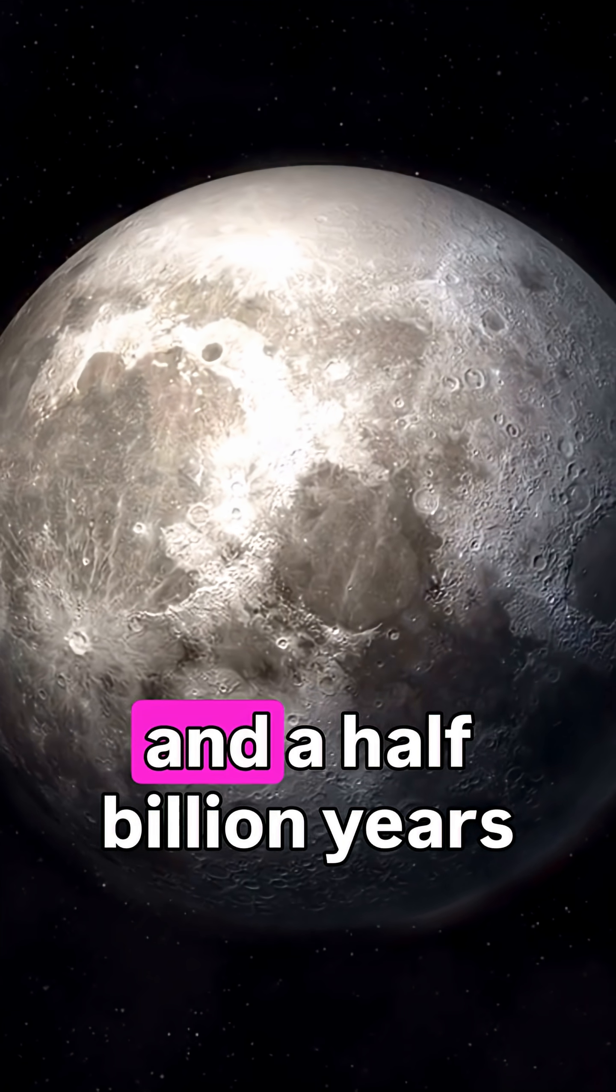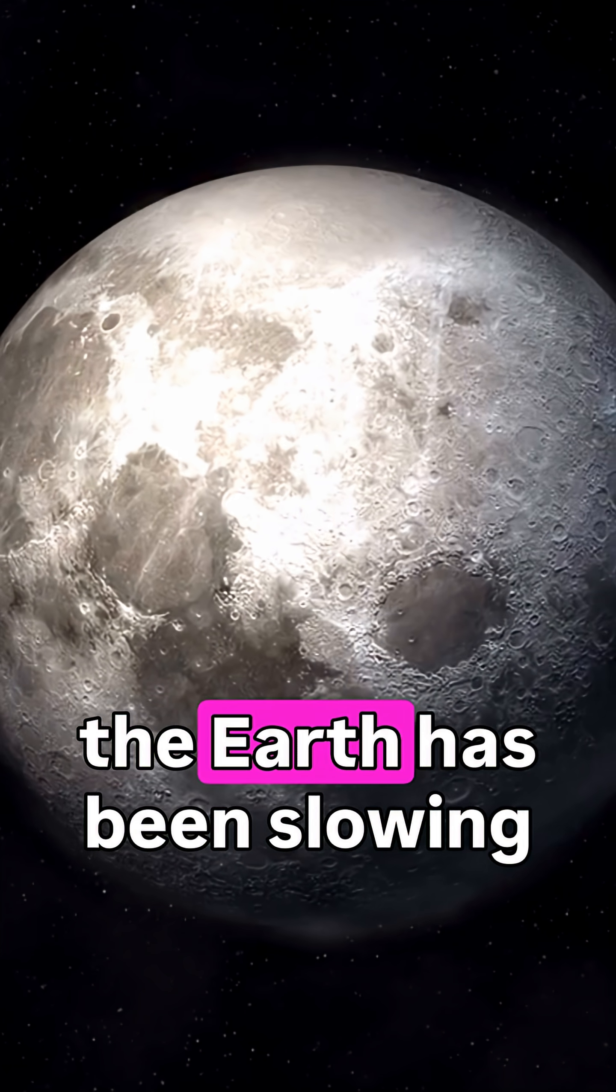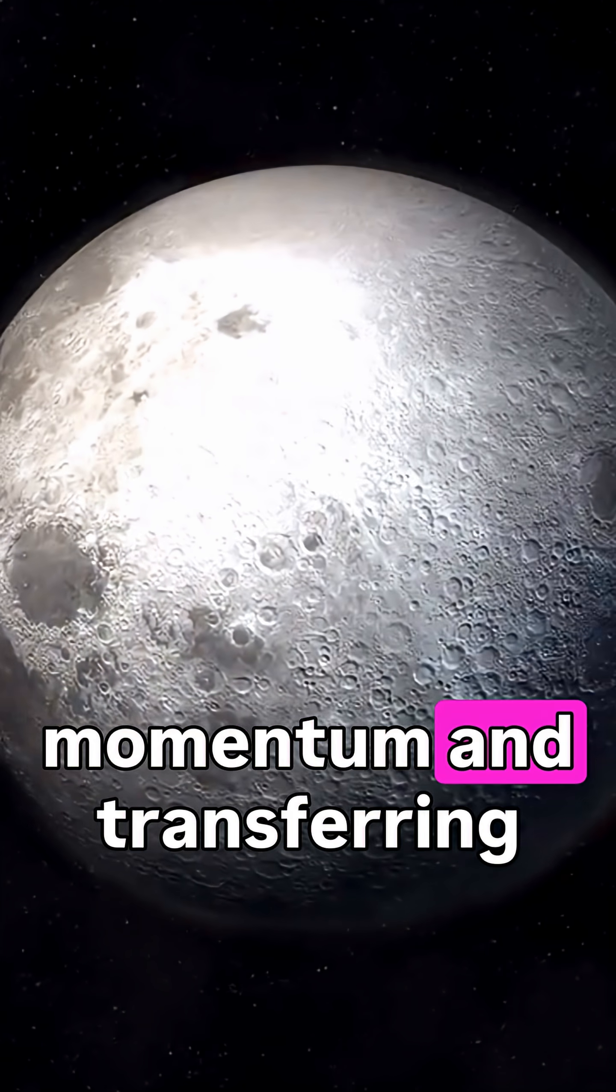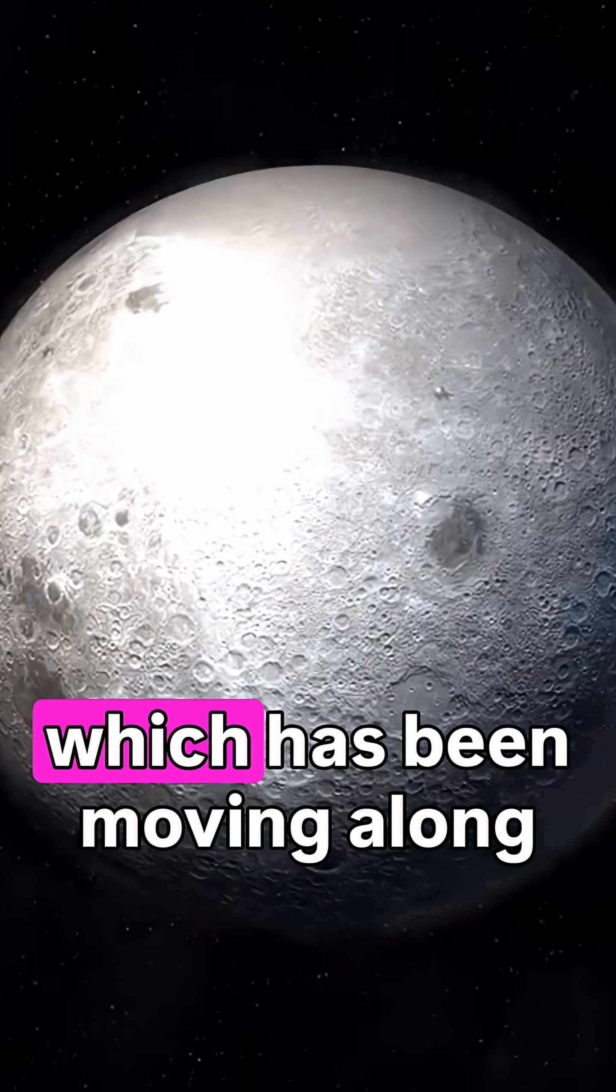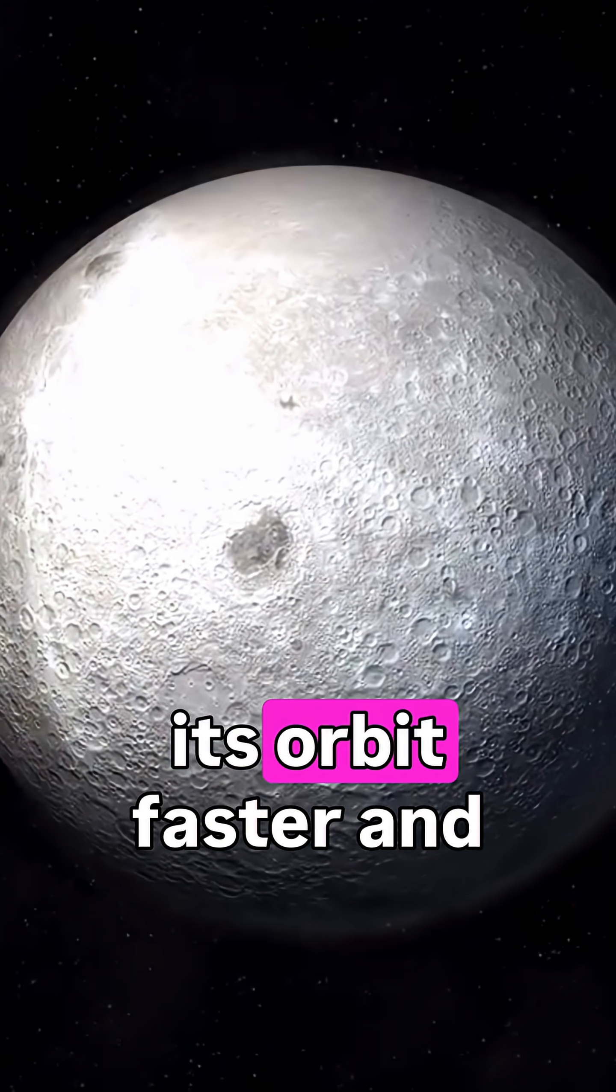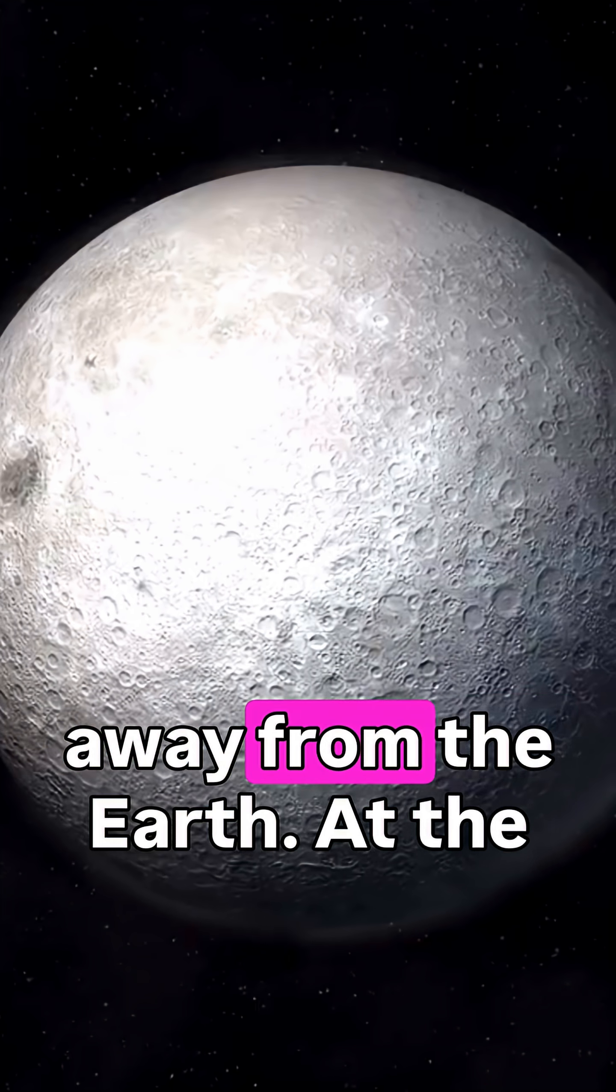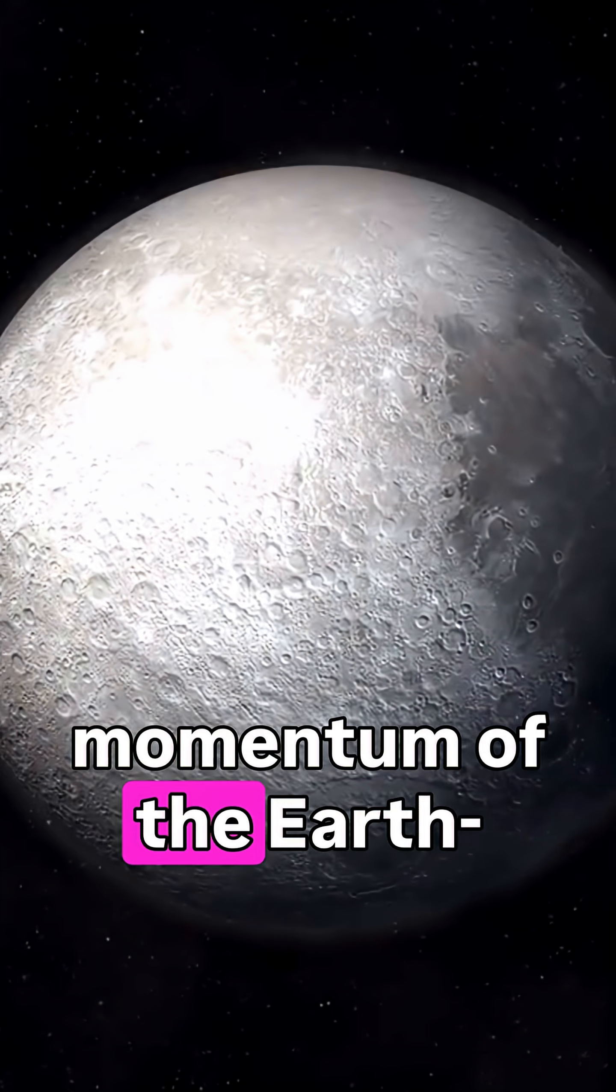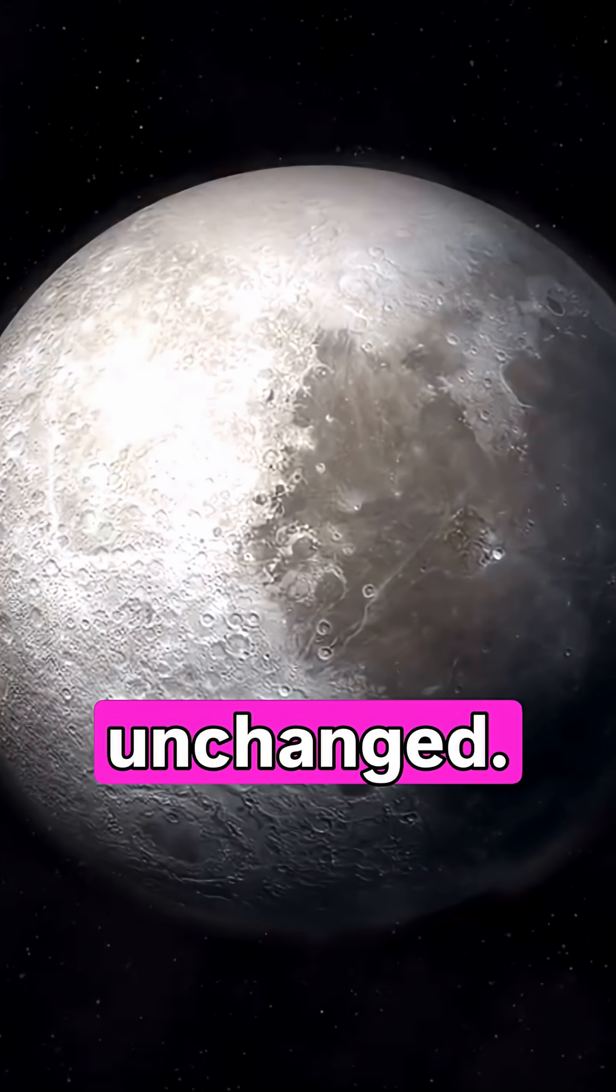Thus, for roughly four and a half billion years, the Earth has been slowing down, decreasing its own angular momentum and transferring it to the Moon, which has been moving along its orbit faster and faster and drifting farther away from the Earth. At the same time, the total angular momentum of the Earth-Moon system has remained unchanged.